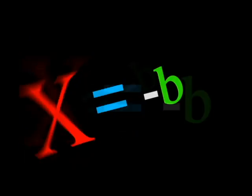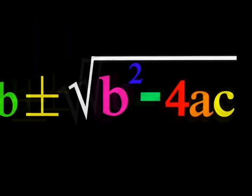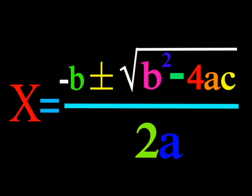So x equals negative b, plus or minus the square root of b squared minus 4ac, all over 2a.